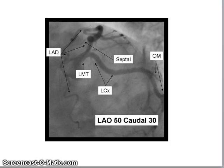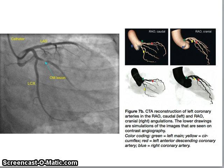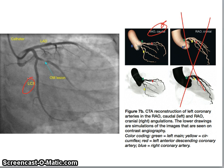Here's another LAO caudal example showing the left main, the LAD going straight up, and the circumflex. Next, the RAO caudal: because it's caudal, it's best for the circumflex. Here the circumflex goes straight down, the LAD is out here, and there's also an OM — obtuse marginal — which is a branch off the circumflex. OMs are labeled sequentially: OM1, OM2, and so on.